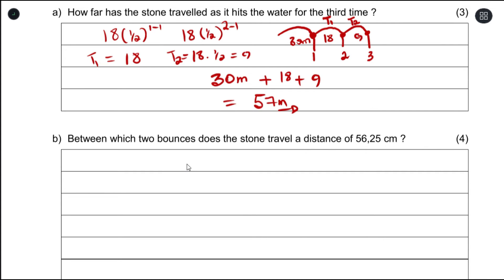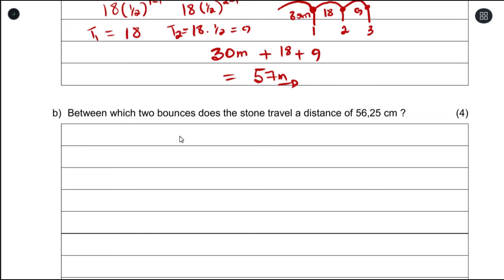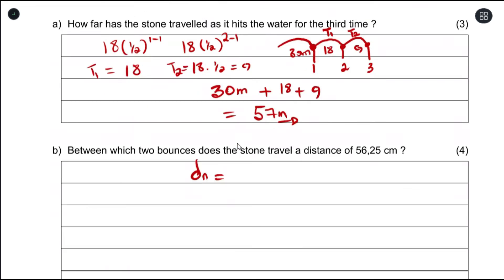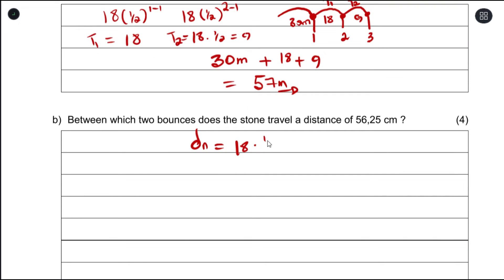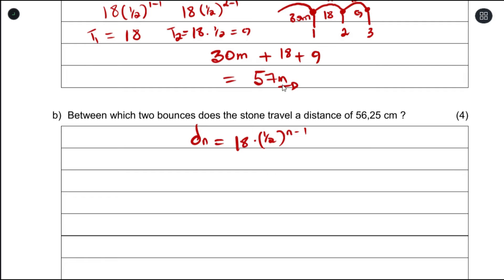The formula we had was d_n equals 18 times one-half to the power of n minus 1. Now we notice that the units we've been working with is in meters, and converting 56.25 cm to meters means dividing by 100, and that will give you 0.5625.